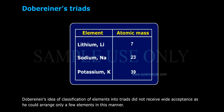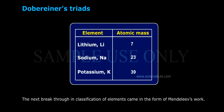Döbereiner's idea of classification of elements into triads did not receive wide acceptance, as he could arrange only a few elements in this manner. The next breakthrough in classification of elements came in the form of Mendeleev's work.